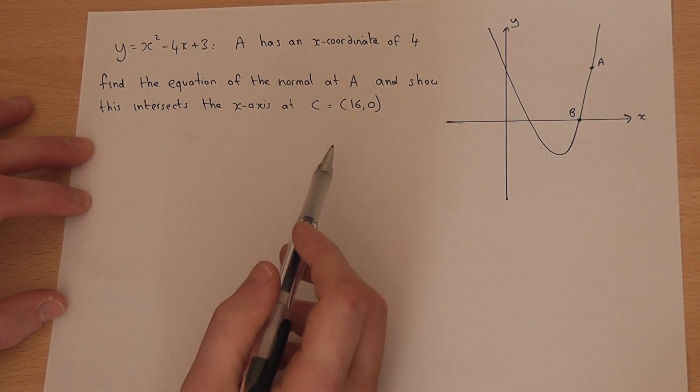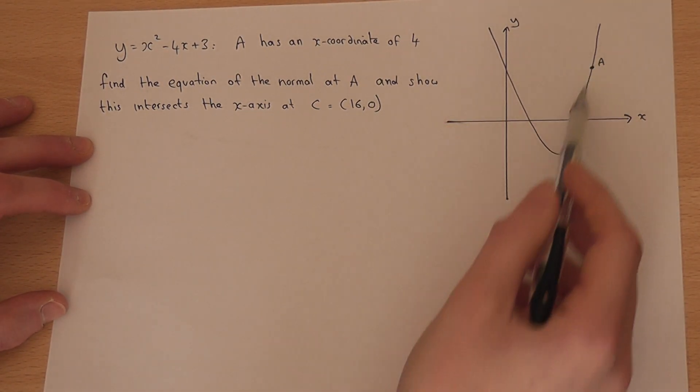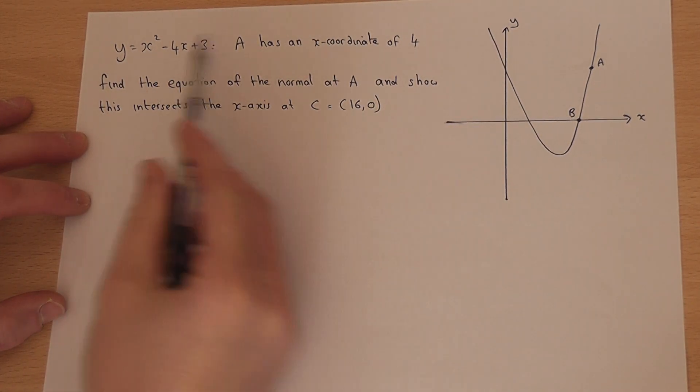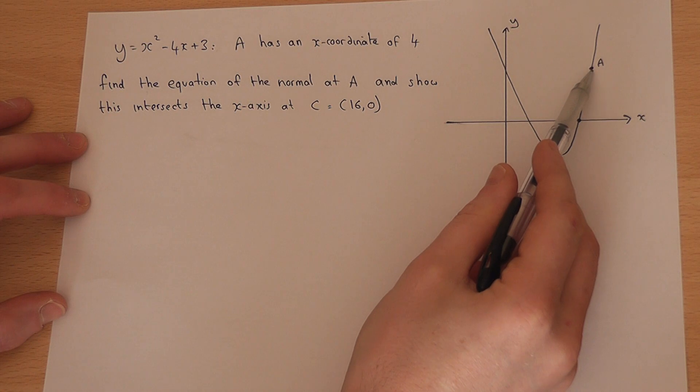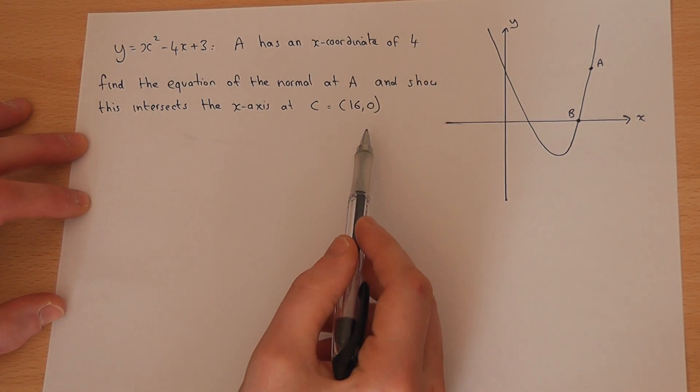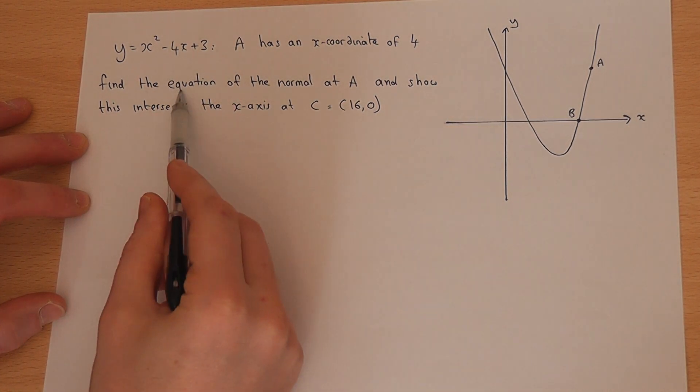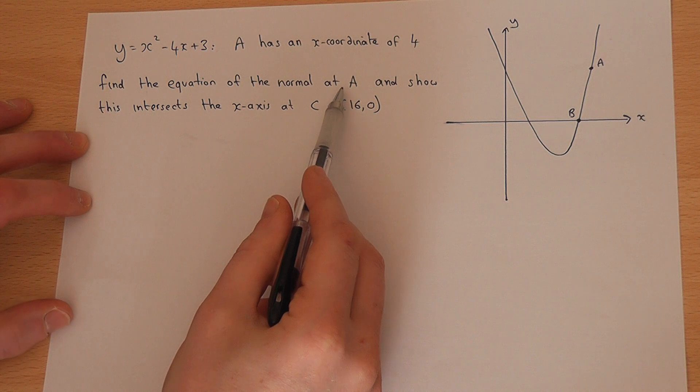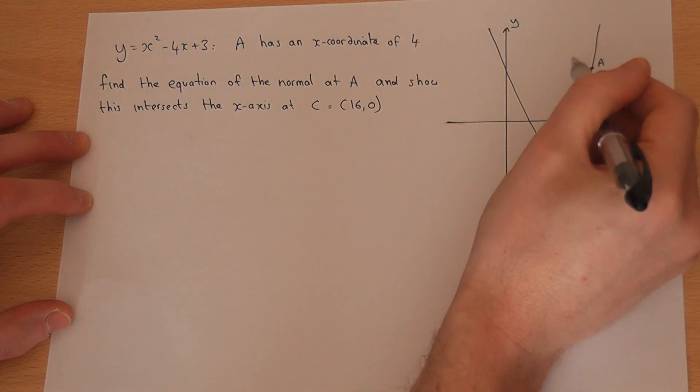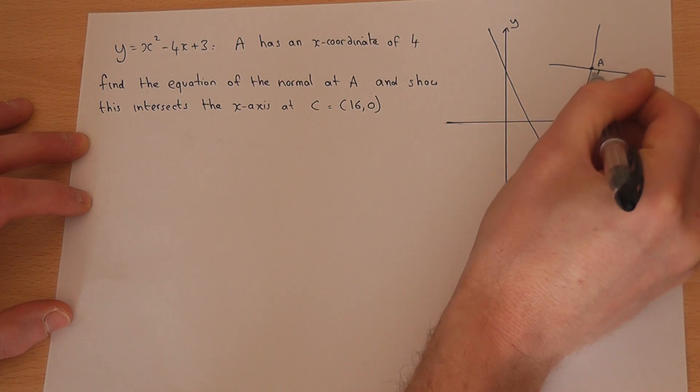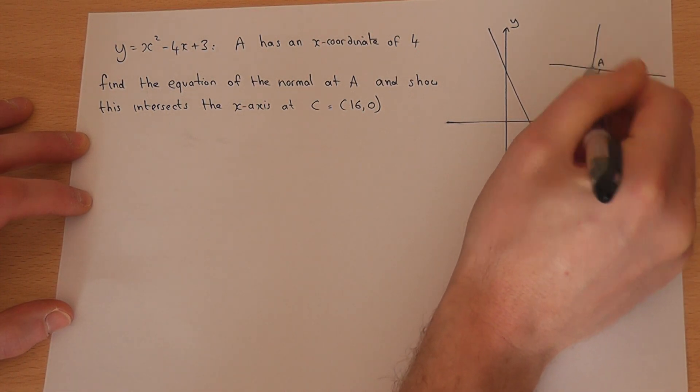In this video we're given a curve with equation y = x² - 4x + 3, and there's a point on that line, coordinate A, with an x-coordinate of 4. We're asked to find the equation of the normal at A. The normal line is the line which shoots out at right angles to the tangent to the curve.